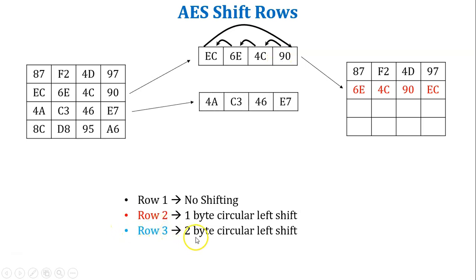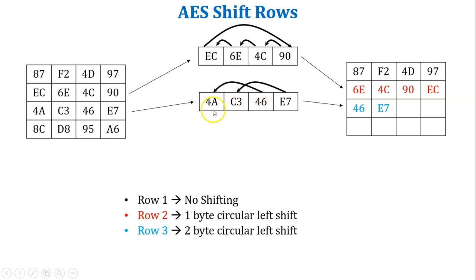Row 3 performs a 2-byte circular left shift. Starting with E7 from the right-hand side, E7 is moved 2 bytes left and placed at the second position of the row. Then 46 performs a 2-byte left shift and is placed at the first position. Then C3 performs a 2-byte circular left shift and is placed at the last position. Similarly, 4A performs a 2-byte circular left shift and is placed at the second-last position.